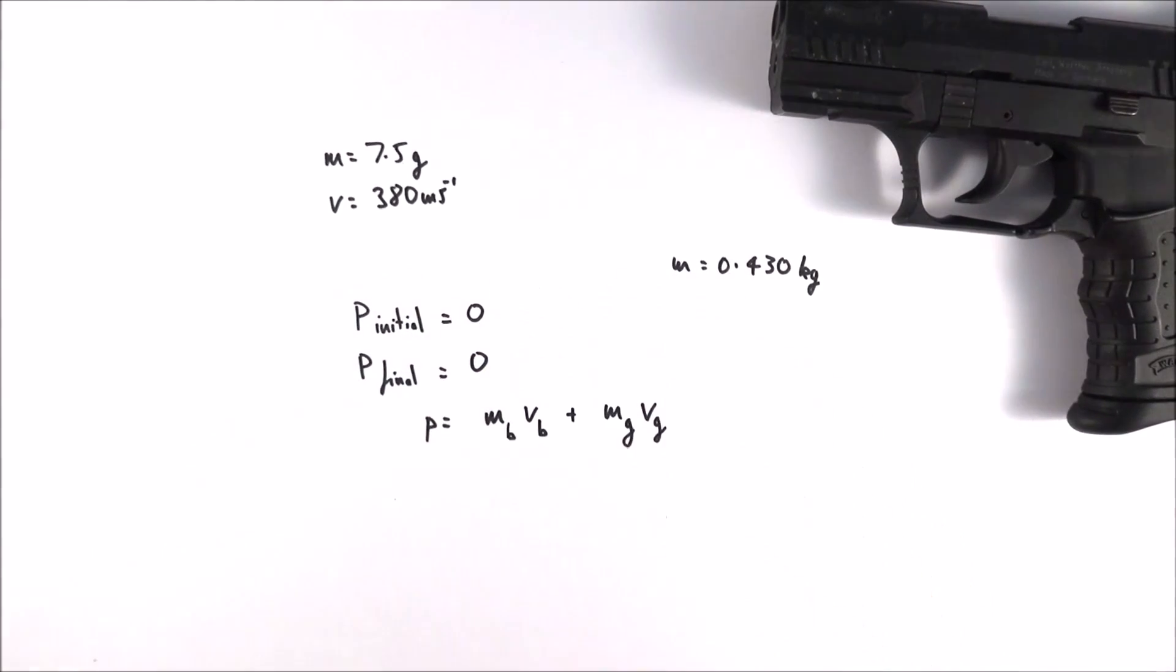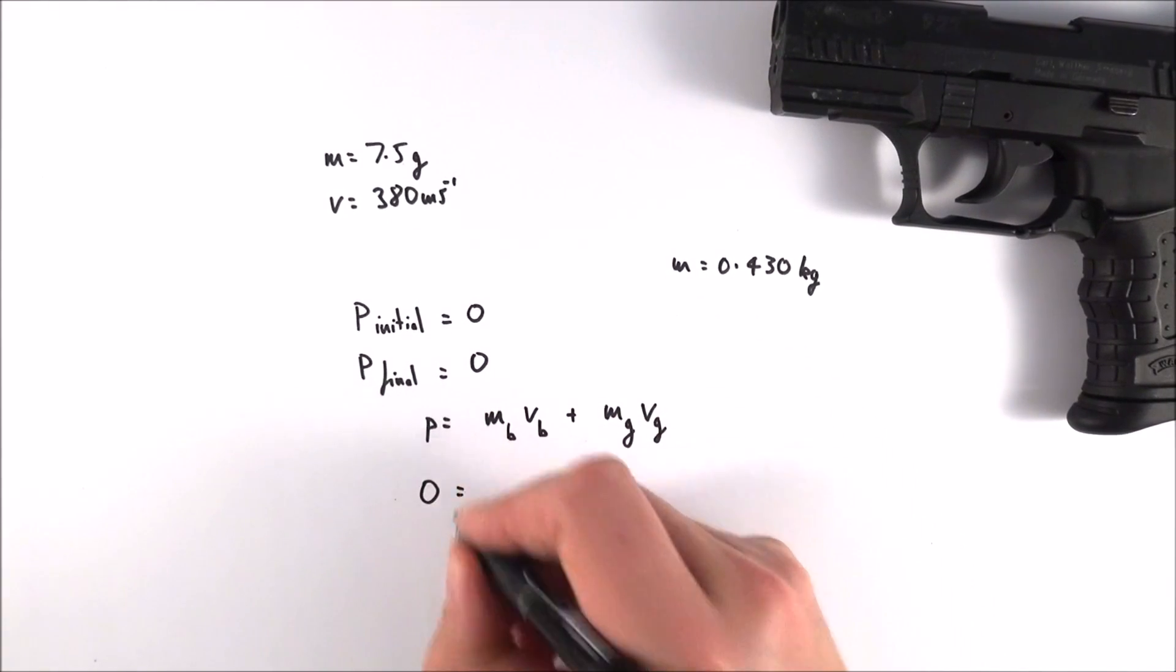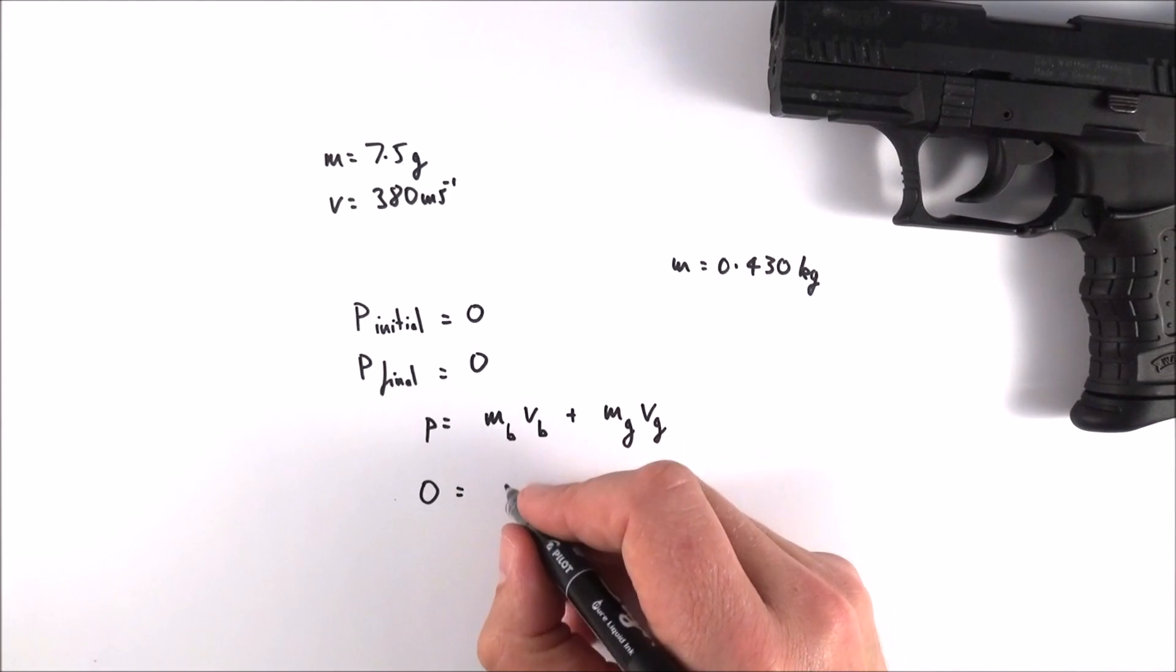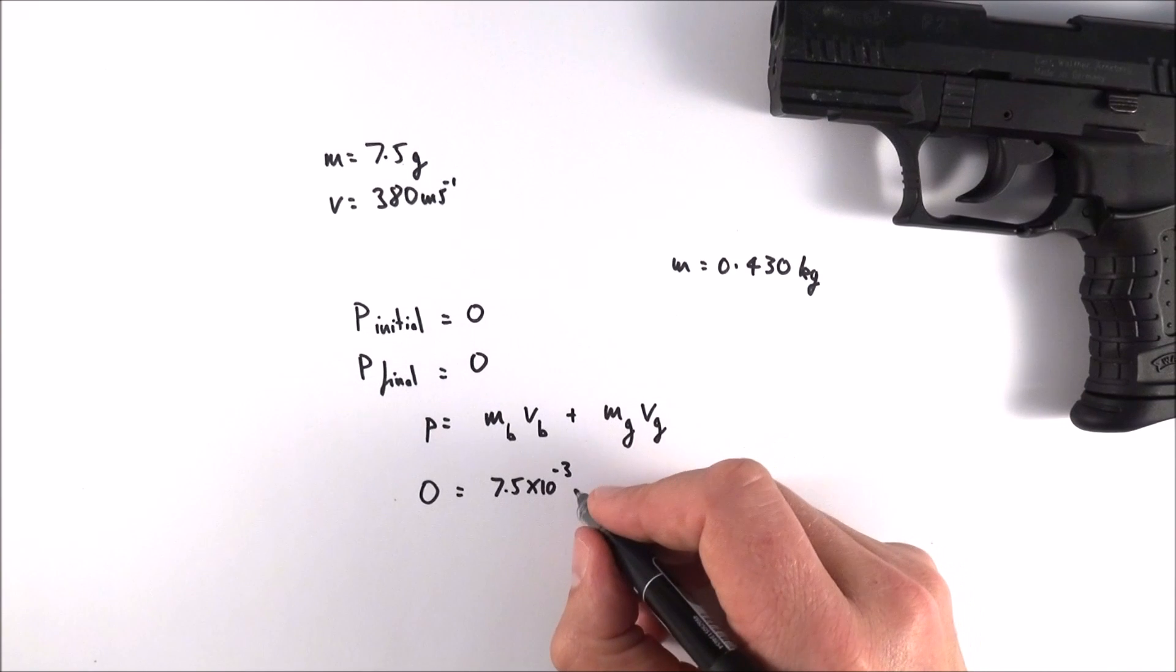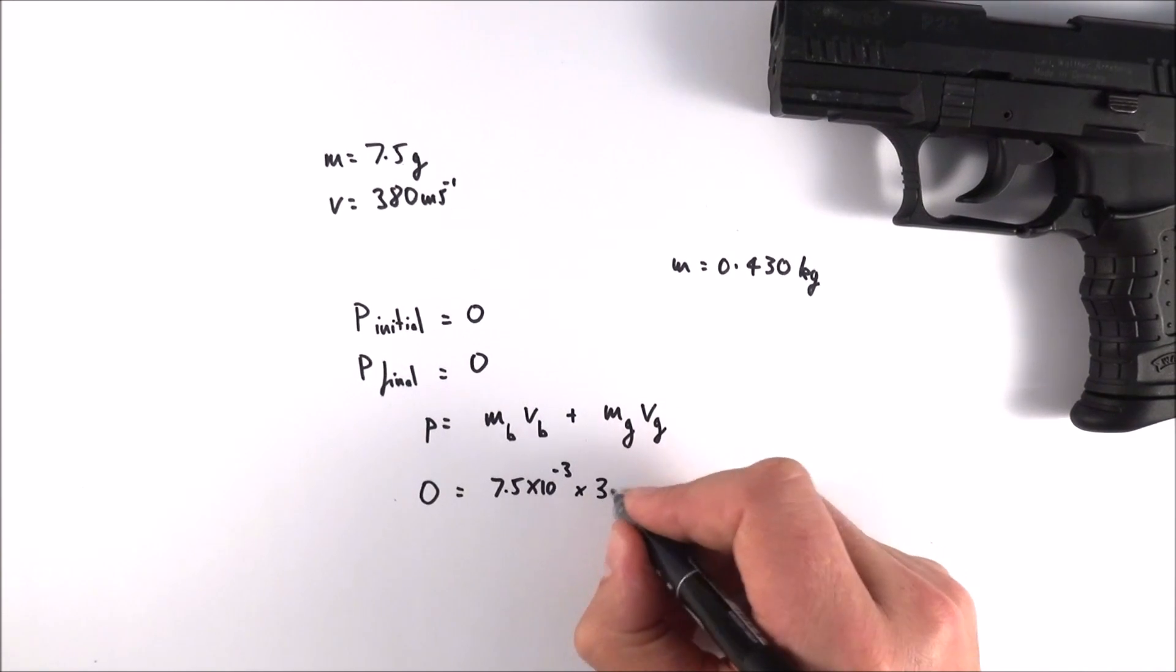Now we know that the final momentum, like the initial momentum, was zero. This is equal to the mass of the bullet, which in this case is 7.5 times 10 to the minus 3 kilograms, multiplied by 380 meters per second.